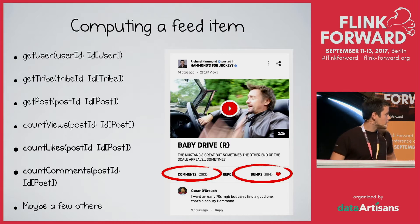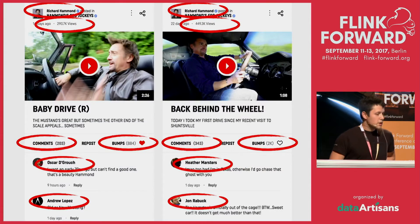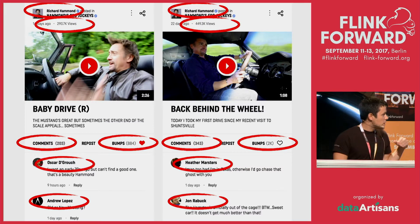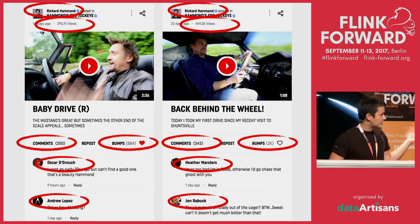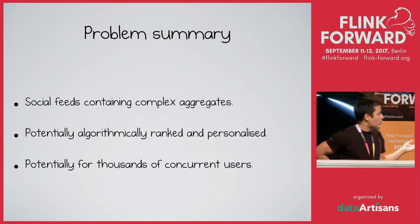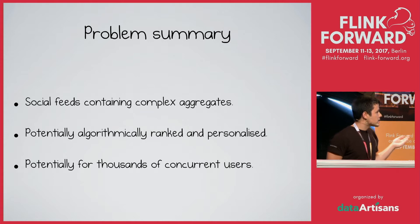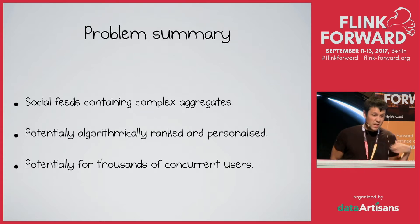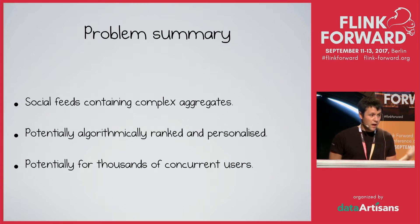For example, there's a user who commented underneath. If you have a feed of those items, it starts becoming obvious that we need to aggregate a large amount of information in order to produce a single page. To summarize the problem: we have social feeds containing complex aggregates that are potentially algorithmically ranked and personalized, and that needs to run for possibly tens of thousands of viewers concurrently.